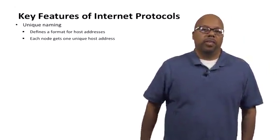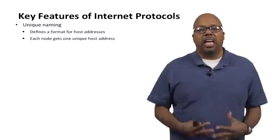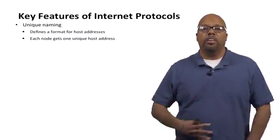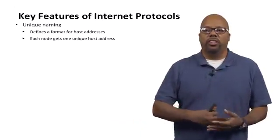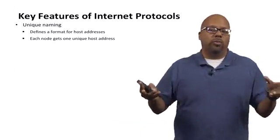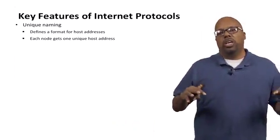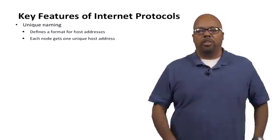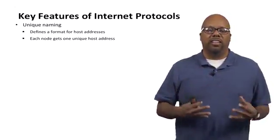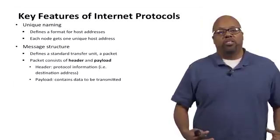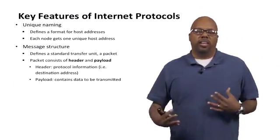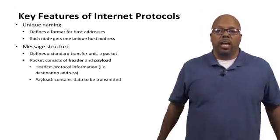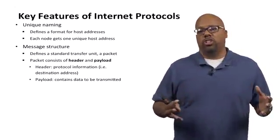Key feature: unique naming. Every machine that's on the Internet has to have a unique name. These protocols have to specify a name for everything on the Internet, so every node gets a unique host address — we call this an IP address. Also, messages sent on the Internet have a structure, and the code that you write is going to have to create these messages. The Internet Protocols define the standard structure of these messages.